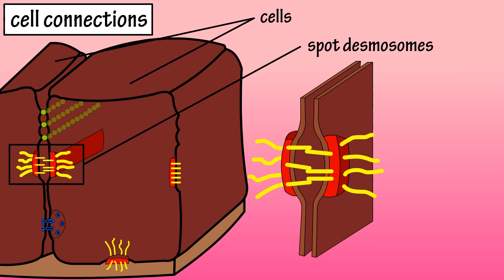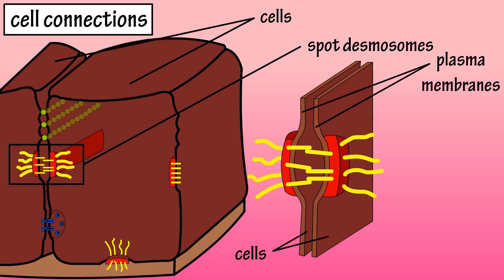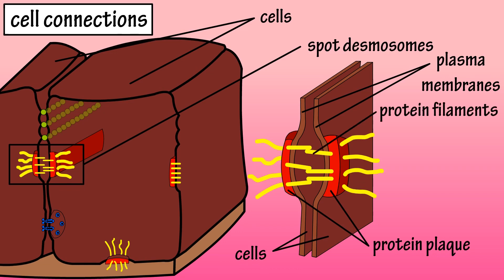Spot desmosomes look like spot welds holding adjacent cells together, and they're composed of several different proteins. Here we have two adjacent cells. Their plasma membranes are here, and on the internal surface of their plasma membranes is what is called a protein plaque. Protein filaments extend from the protein plaque in both cells, through the plasma membrane, and anchor to one another outside of the cell.